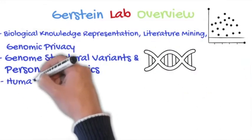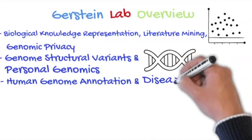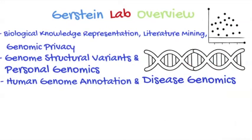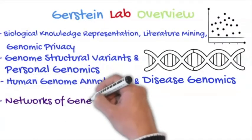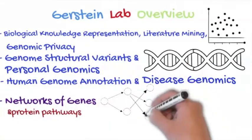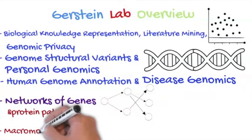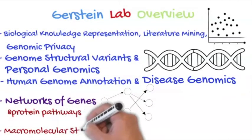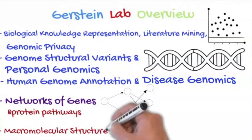The center of our work is on human genome annotation and disease genomics, trying to interpret disease variants in terms of the human annotation. And a big way we do this is thinking about networks of genes and protein pathways. And then this work transitions into more physically based work, where we start to look at actual macromolecular structures and motions.